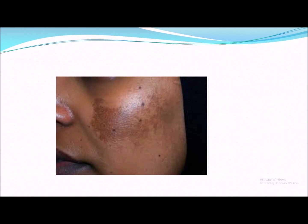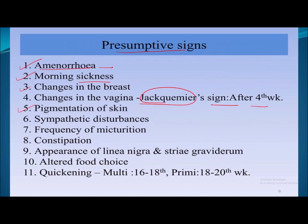Pigmentation of the skin may be seen in pregnancy and is known as melasma. This pigmentation is due to various hormonal changes. Although the clear mechanism is still not fully known, it may be due to placental secretion of melanocyte-stimulating hormone.